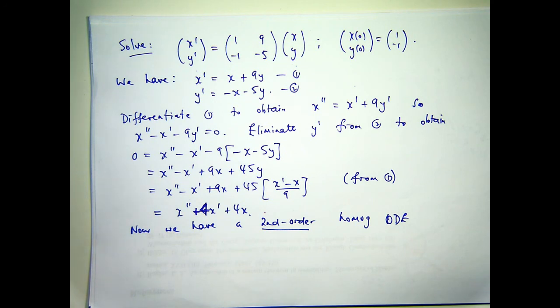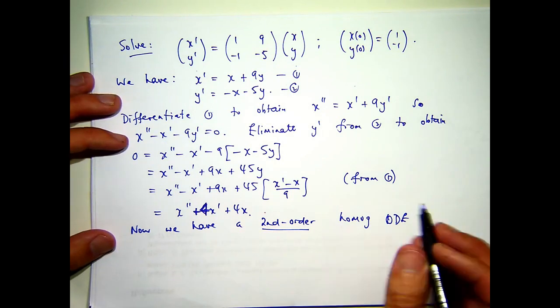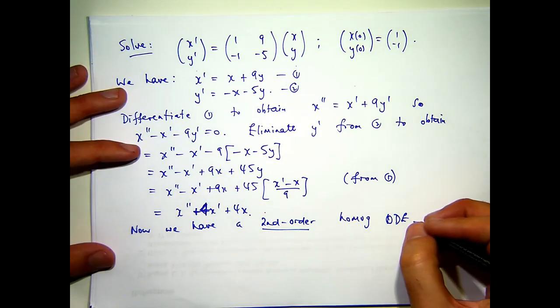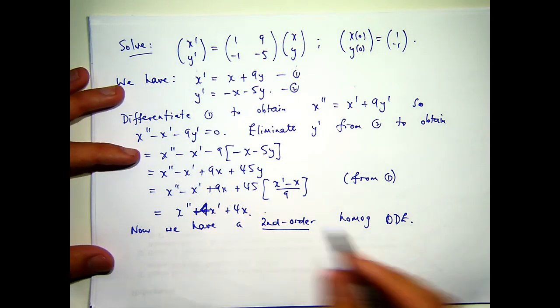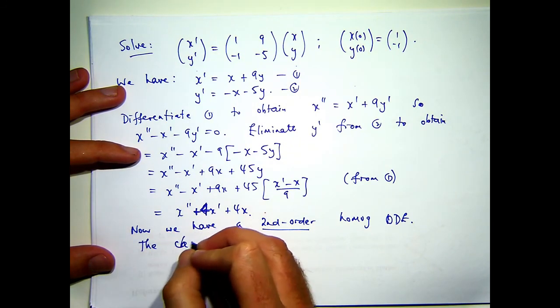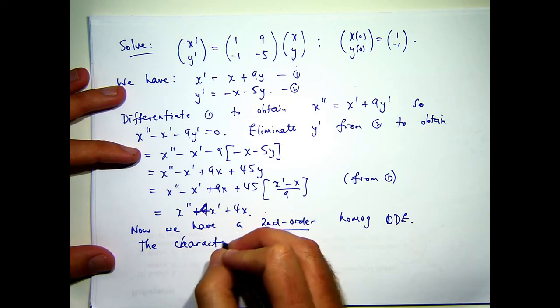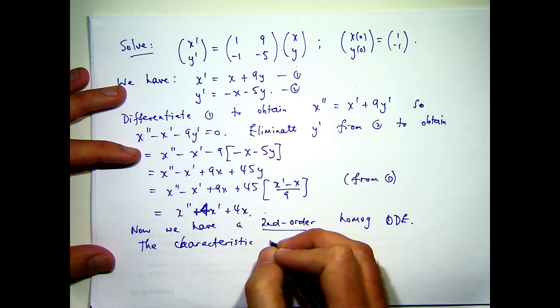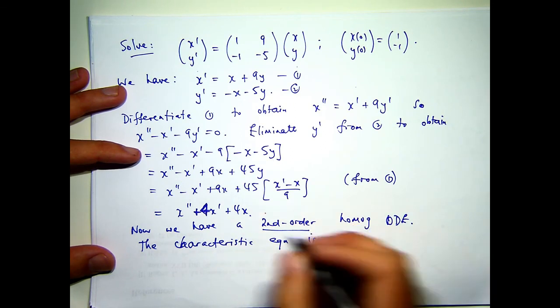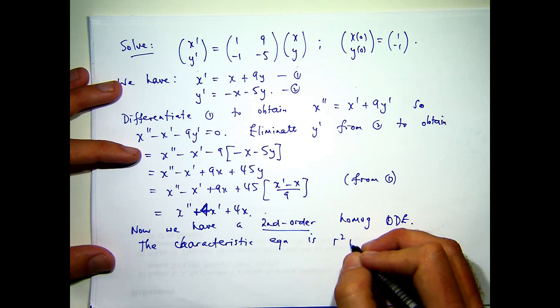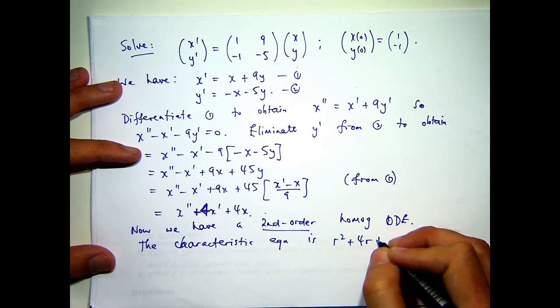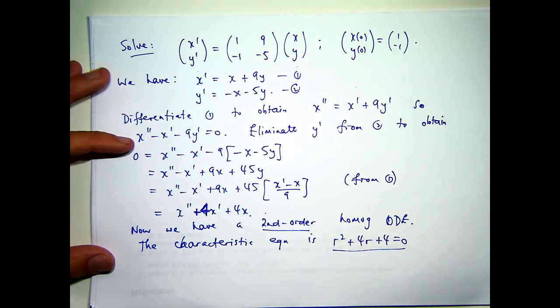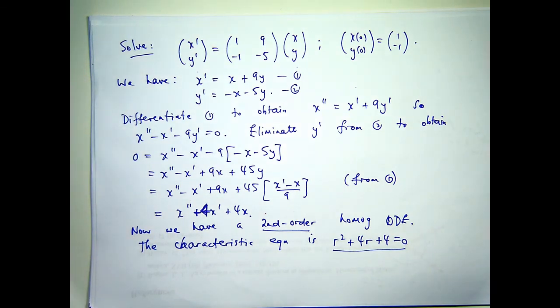So how do we solve it? Well, we look at the characteristic ODE, the characteristic equation. So it's going to be r squared plus 4r plus 4 equals 0. And what we do is we look at the root... Well, I guess the solutions to that characteristic equation. I can factorise it pretty easily.